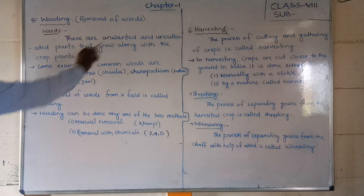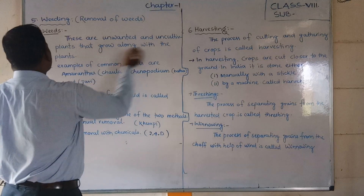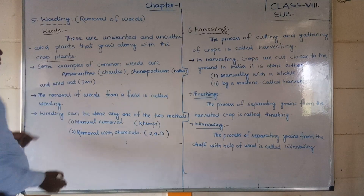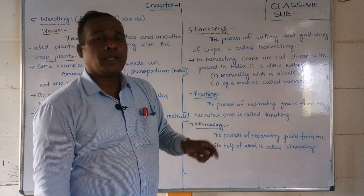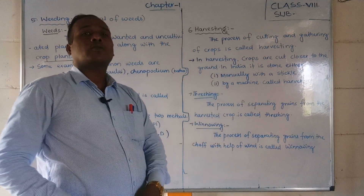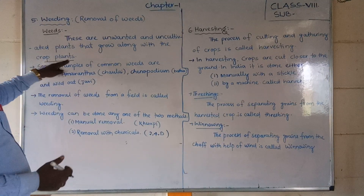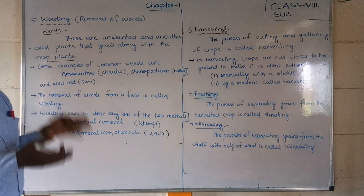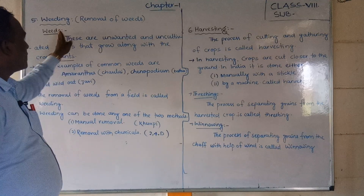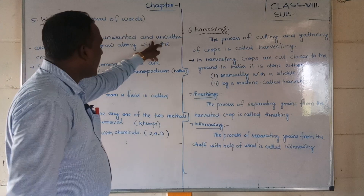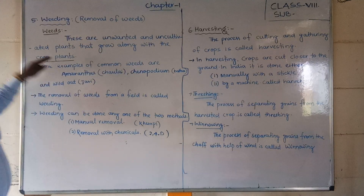Weeds are unwanted and uncultivated plants that grow along with the crop plants. These are called weeds.